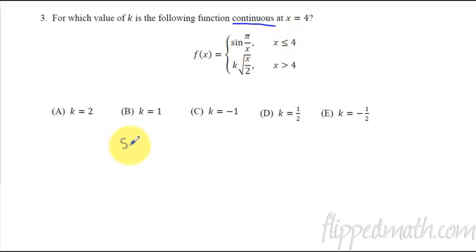So I'm going to have that sine of pi over 4, not x. I'm going to plug in the 4. That first piece has to equal k times square root of not an x but a 4 over 2. So why did I put 4? Again, because that's this 4 value. When the graph comes together, the two y values have to equal each other. So I just set the pieces equal. And now from there, you just solve for k.